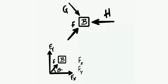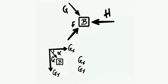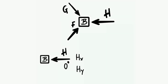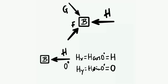Starting with F, the horizontal component Fx = F cos(theta) and the vertical component Fy = F sin(theta). Similarly, for force G, Gx = G cos(alpha) and Gy = G sin(alpha). Finally, for H, Hx = H cos(0) = H and Hy = H sin(0) = 0, since cos(0) = 1 and sin(0) = 0.